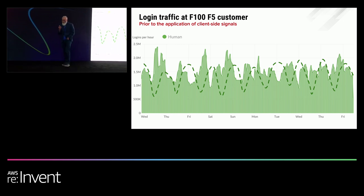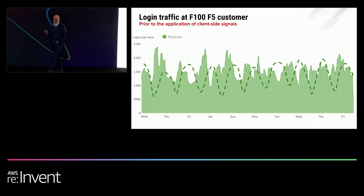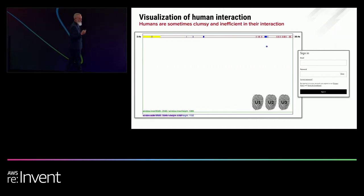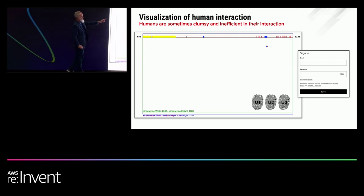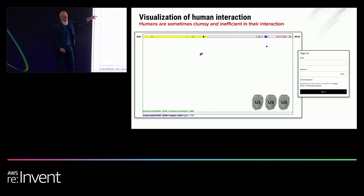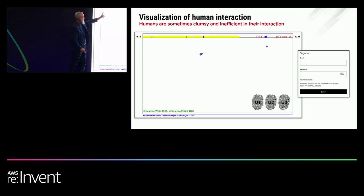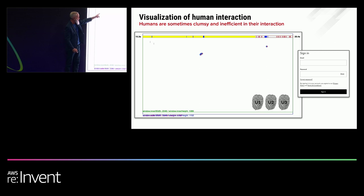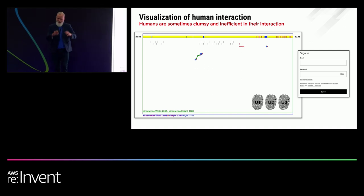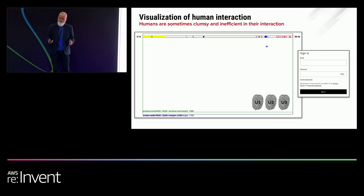This is what the traffic looked like prior to the application of any F5 client-side signals. Let me take a tangent to explain what I mean. This is a replay of a user's interaction with the login form on the right. Up here on the top is a timeline left to right — each of those tick marks corresponds to an event played out below. You're going to see key down and key up events, mouse movements, mouse clicks, and the enter key. We take all this information, apply some algorithms to it, and generate various types of user fingerprints.